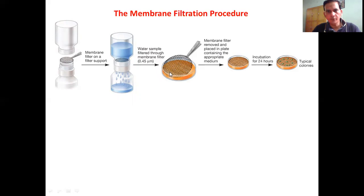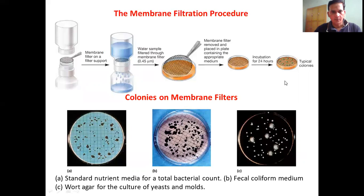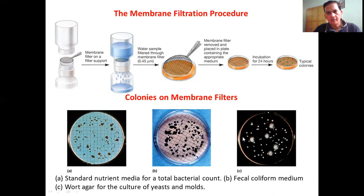The membrane now has a concentration of those microorganisms. These microorganisms from the membrane surface are then placed on an agar plate and incubated, giving rise to visible colonies growing on standard nutrient media. When the same sample is spread onto different media, growth of different microorganisms is observed, indicating that the water sample contained a mixture of different kinds of microorganisms.